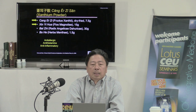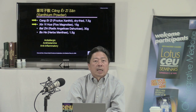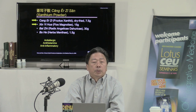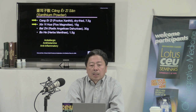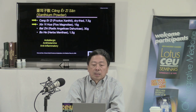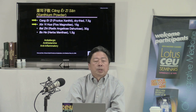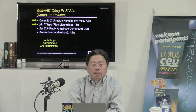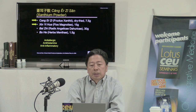When you use this formula, you really need to know that in material medica Cang Er Zi is usually designated as 'slightly toxic.' Unfortunately, most textbooks don't tell you what it's toxic to, what the adverse reactions are, what the signs and symptoms are, and what the contraindications are. As it turns out, the main contraindication is to the liver and also to the kidney. In its raw and unprocessed form it contains toxic proteins that, if consumed in large amounts, can be quite toxic to the liver and kidney.